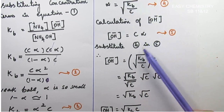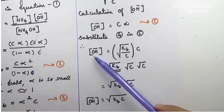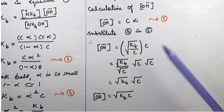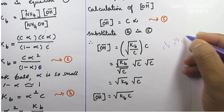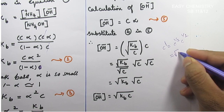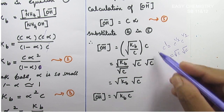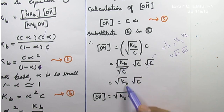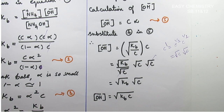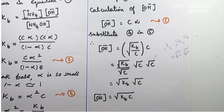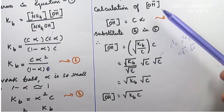OH⁻ ion concentration equals alpha times c. Substituting alpha equals root of Kb divided by c: OH⁻ equals (√(Kb/c)) × c. Using exponent rules, c to the power 1/2 multiplied by c to the power 1/2 equals c. So OH⁻ concentration equals the square root of Kb times c. This is the final result for the weak base derivation.